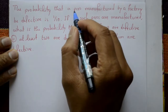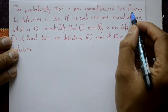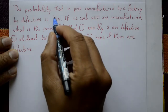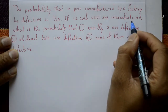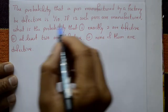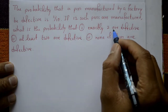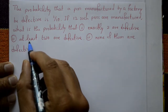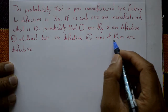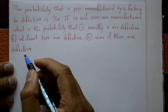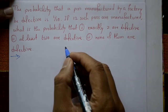The probability that a pen manufactured by a factory is defective is 1 by 10. If 12 such pens are manufactured, what is the probability that: first case — exactly two are defective; second case — at least two are defective; third case — none of them are defective? We will solve this using binomial distribution.